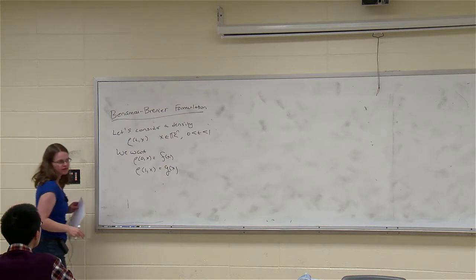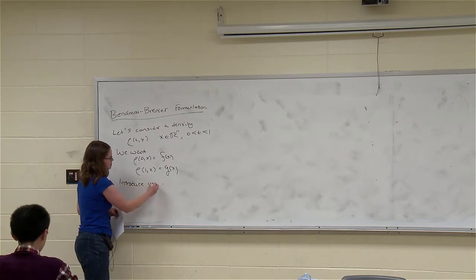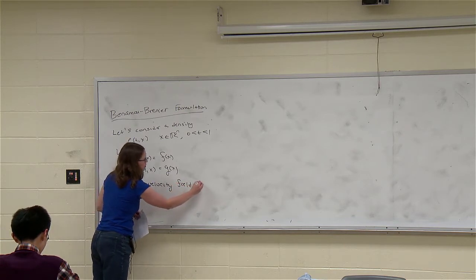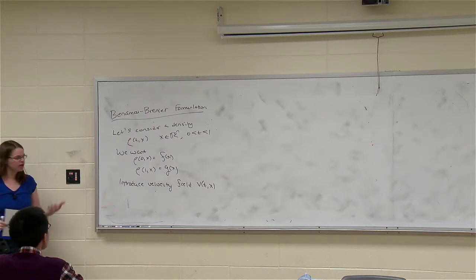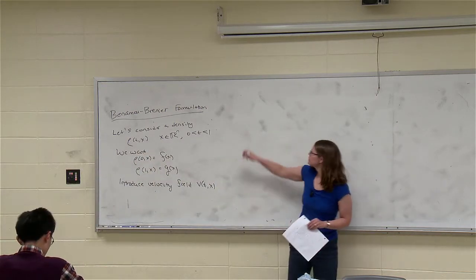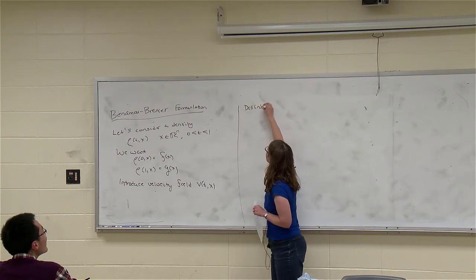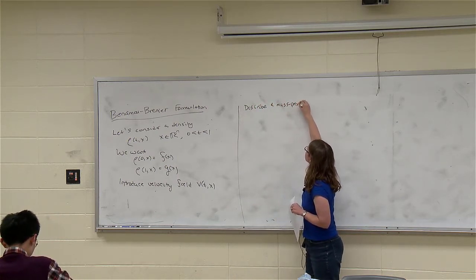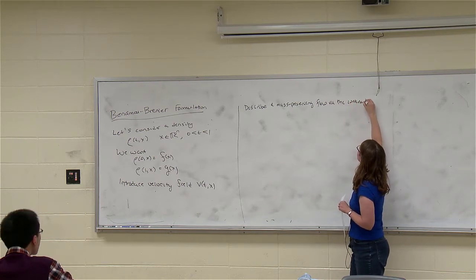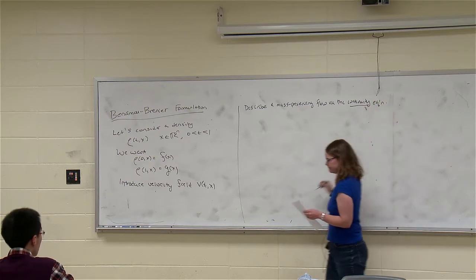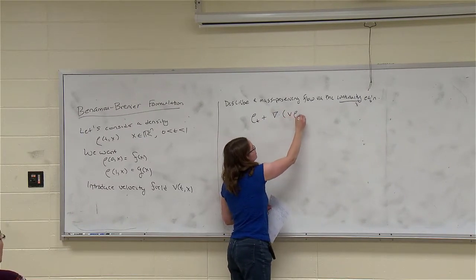We introduce a velocity field v, which may also be time and space dependent, and we want this flow to preserve mass. We describe a mass-preserving flow via the continuity equation: ρ_t plus the divergence of (v·ρ) equals zero.